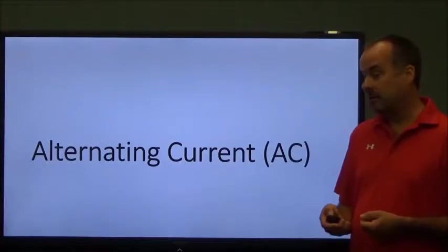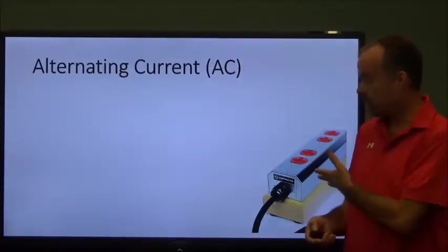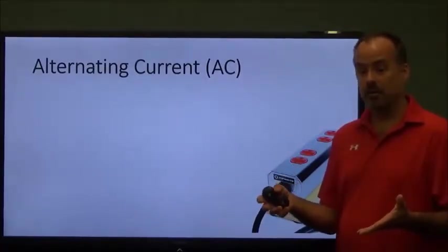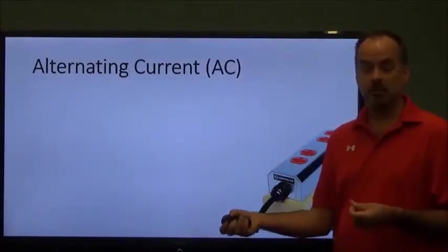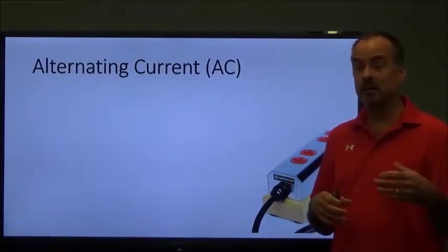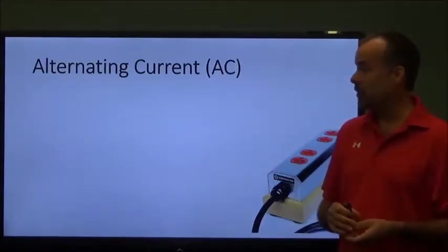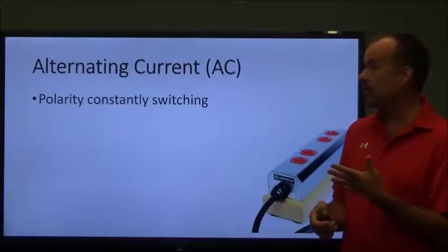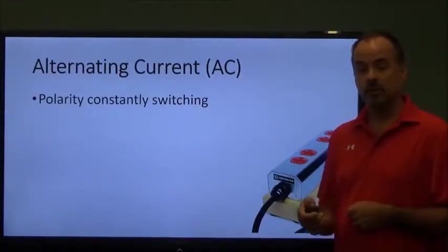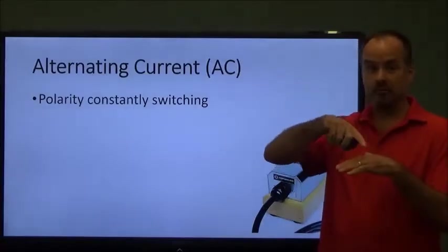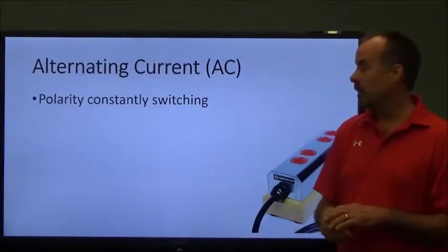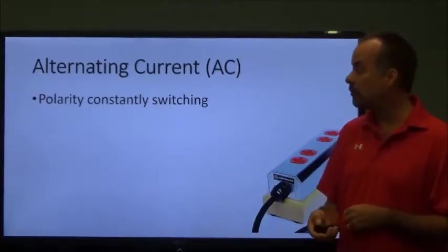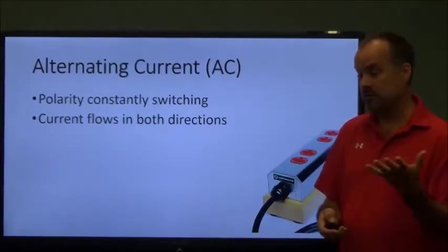Alternating current or AC, this is what you'll find in your home. Anything that you plug in in your home, you're plugging in AC power. That's not to say that once you plug in that AC power, once it's in the device that you're plugging in, it's not converted to DC. But, for everything we're going to be talking about here, it's going to be all AC power like what we have at home. With AC power, the polarity is constantly switching. There's no positive and negative. It's constantly swinging positive and negative. And, the current switches accordingly depending on where we're at in our wave cycle. Current flows in both directions.